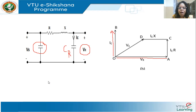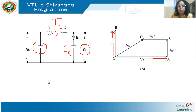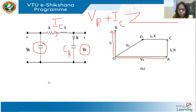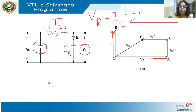The current flowing through the series impedance Rx will also be IC. The sending end voltage Vs will be Vr plus IC times Z, where Z is R plus jX. This drop has two components: the drop across the resistance and the drop across the inductive reactance. In a resistor, current and voltage are in phase, so the drop across R is in phase with IC. For an inductor, the voltage leads the current by 90 degrees, so the drop IC times X leads IC by 90 degrees.